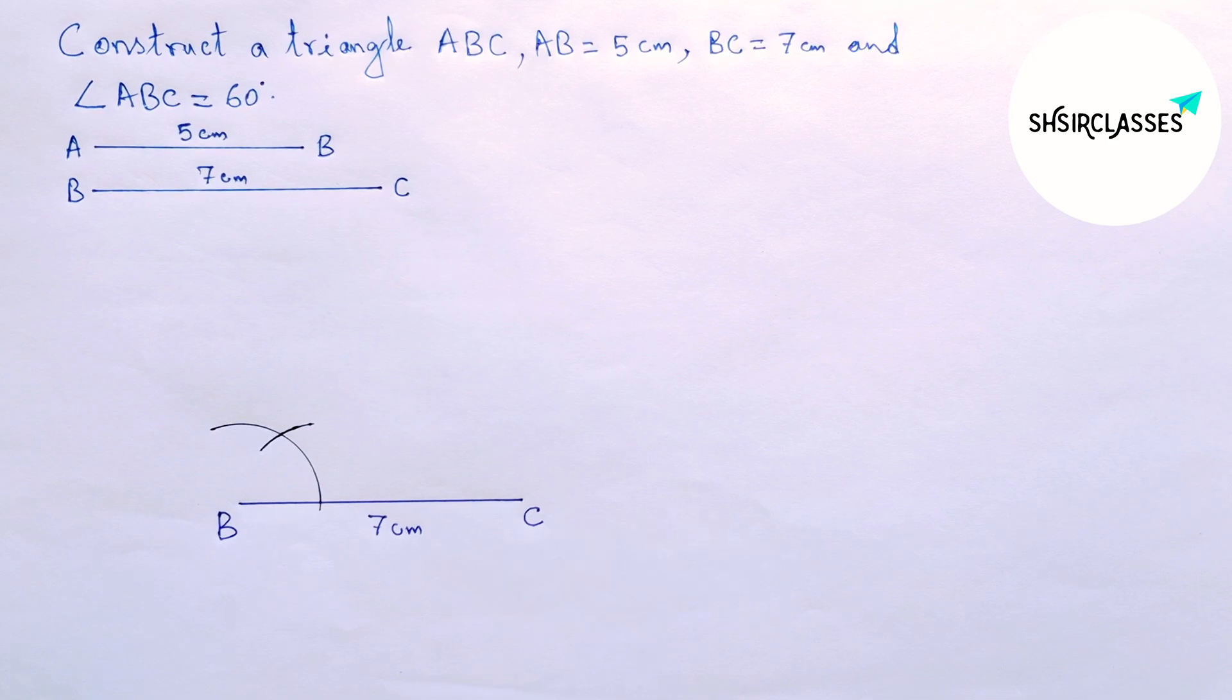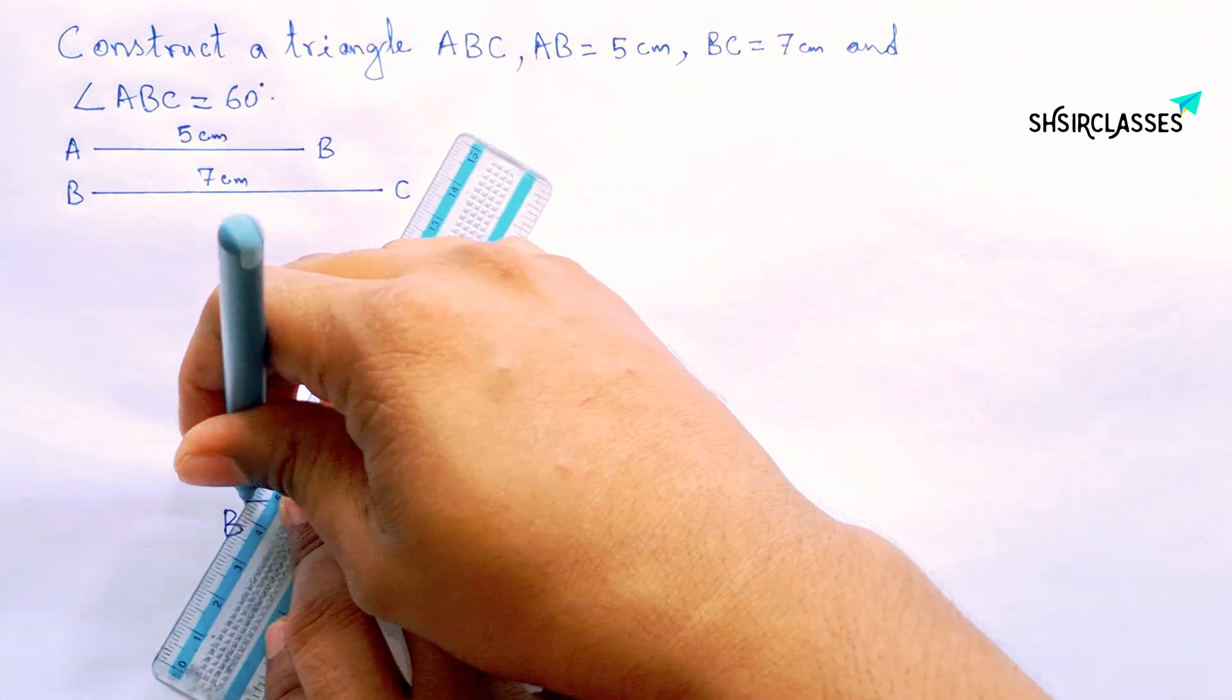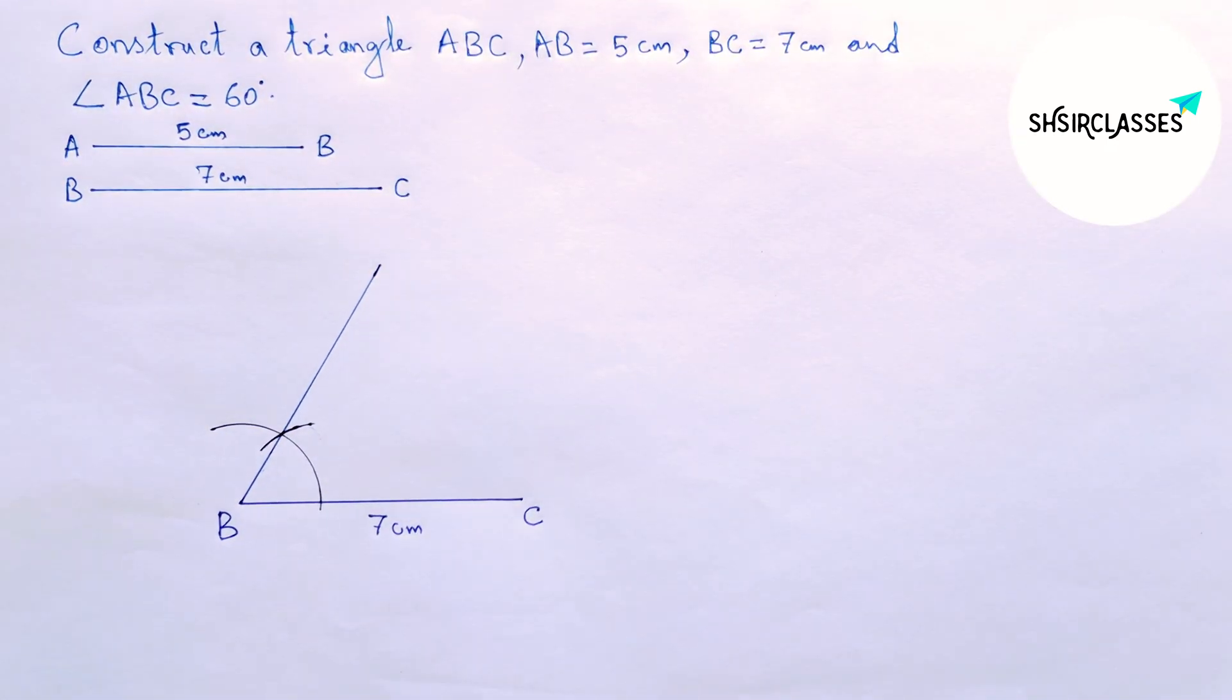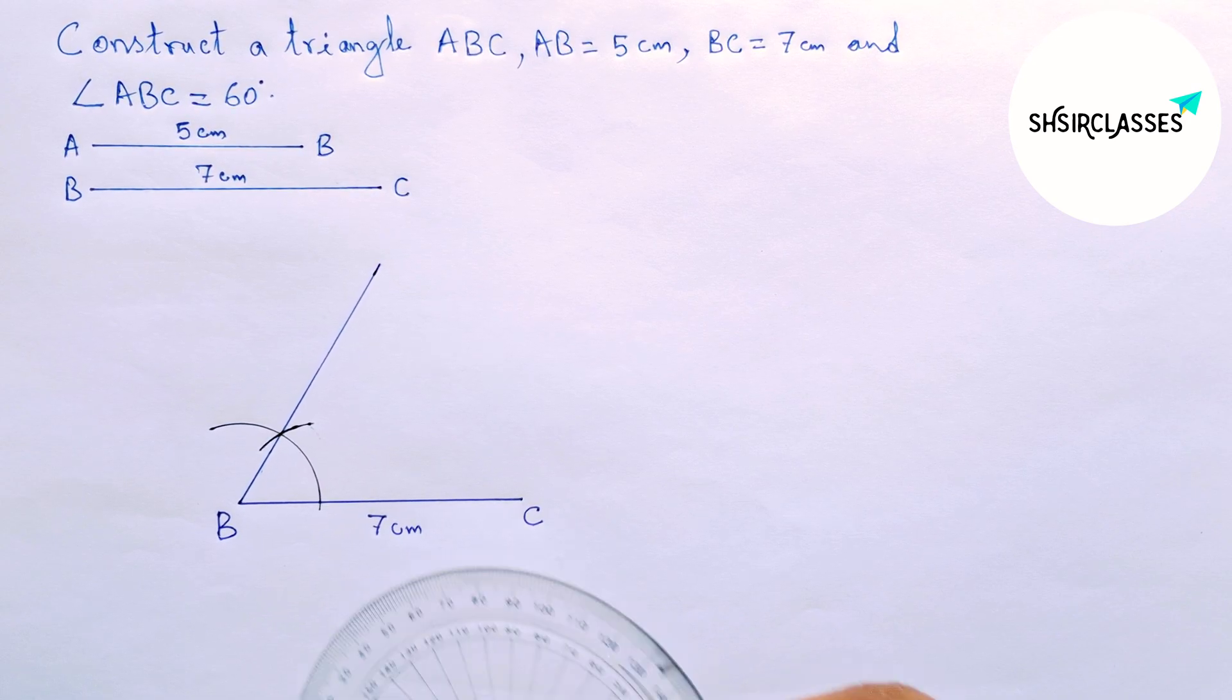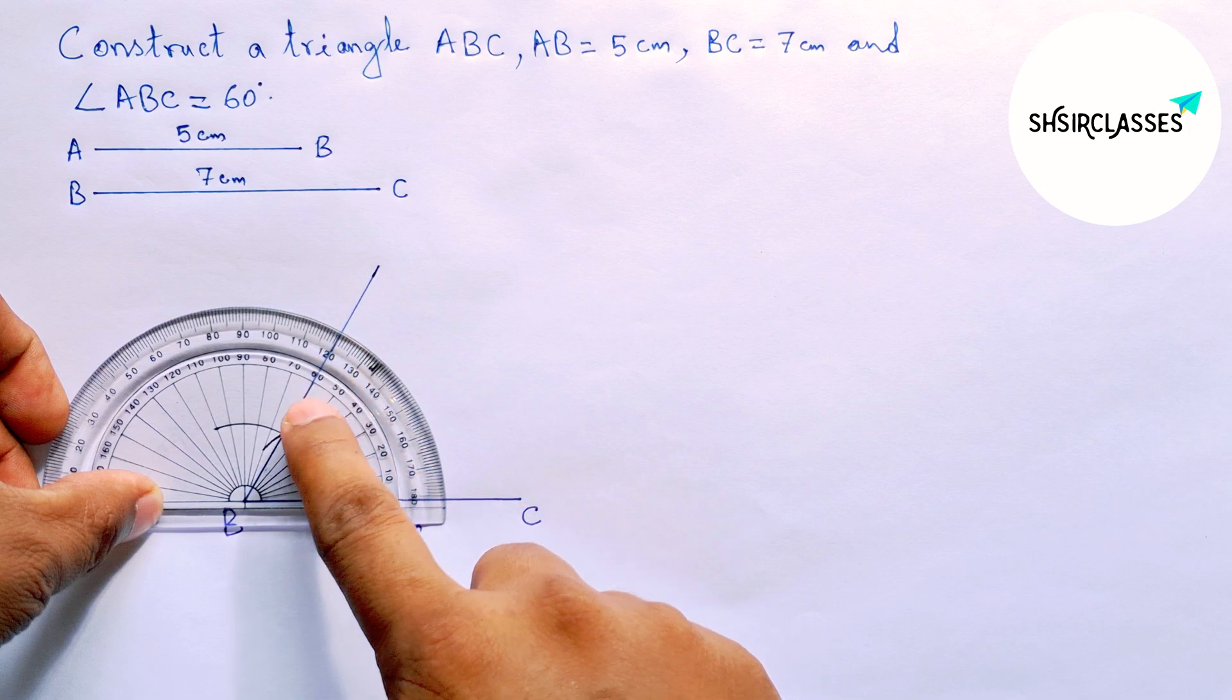Now checking this angle, whether it is 60 degrees or not, with the help of a protractor. This is a 60 degree angle, perfectly.